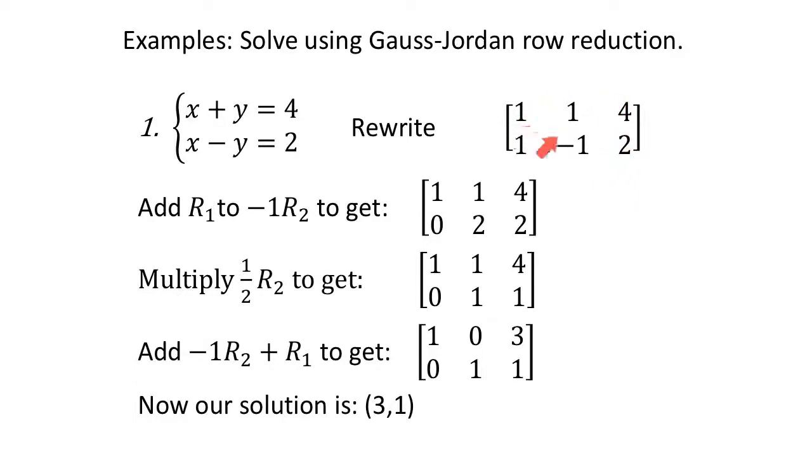I have a 1 in the upper left-hand corner. I'm going to use this row 1 and eliminate this 1 and make it into a 0. I'm going to add row 1 to -1 times row 2. When I add row 1 (1, 1, and 4) to -1 times row 2 (that's -1, positive 1, -2), my answer goes in my new row 2. I kept row 1 exactly the same: 1, 1, 4. 1 - 1 is 0. 1 and 1 makes 2. 4 and -2 make 2. And I got my new row 2.